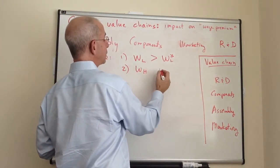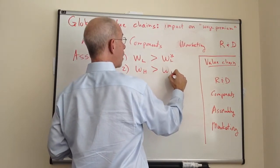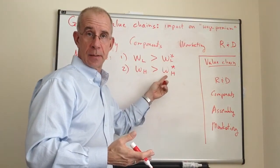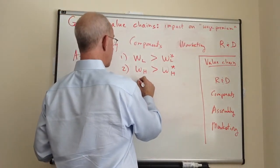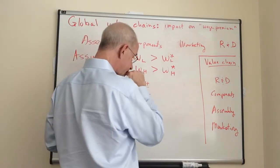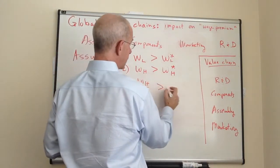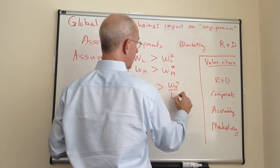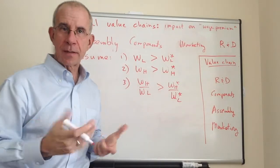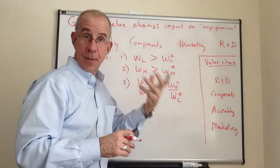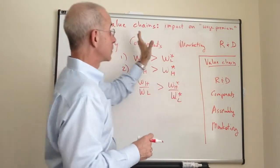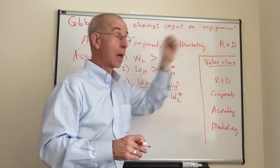We also assume that high-skilled workers in the home country are more expensive for the same task than high-skilled workers in the foreign country. Finally, we're going to make an assumption about the relative wages — essentially the wage premium in the home country compared to the wage premium in the foreign country. One way to think about this is that the home country is the place where there is relatively high demand for high-skilled workers, so their wages are going to be higher because most of the high-skill activities take place there.